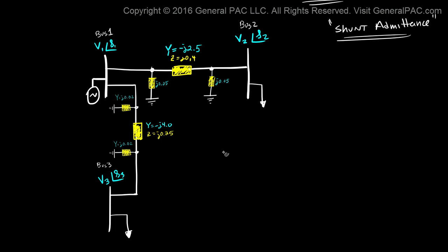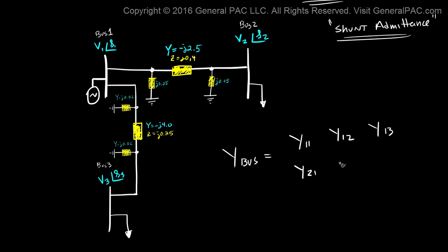To complete Part 1, we're going to write out our matrix. Y-bus equals a matrix where Y11 represents the admittance for Bus 1, Y12 represents the admittance between Bus 1 and Bus 2, Y21 represents the admittance between Bus 2 and Bus 1, Y22 is the admittance for Bus 2 — and as you can see, Bus 2 doesn't have direct admittance associated to it so that value equals 0, which we'll cover in Part 2. The matrix also includes Y31, Y32, and Y33.